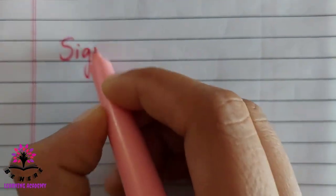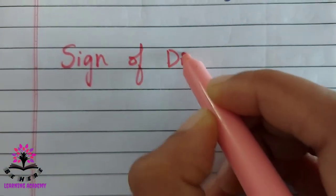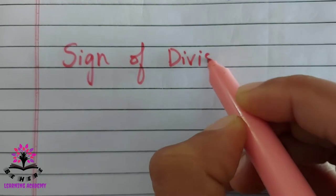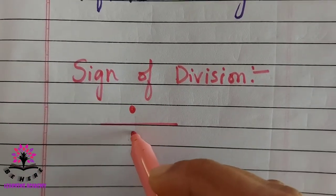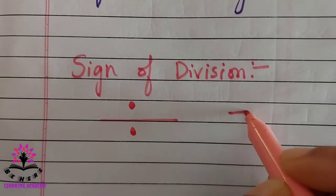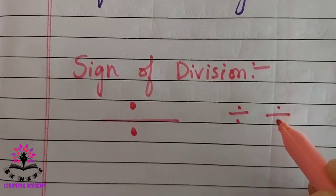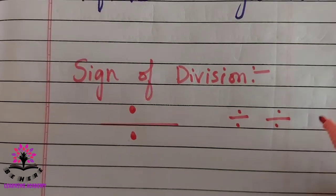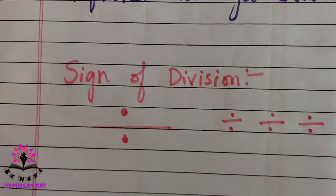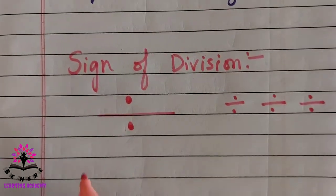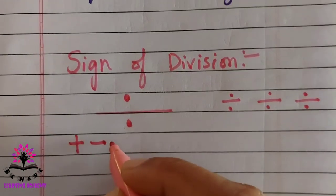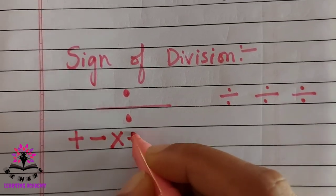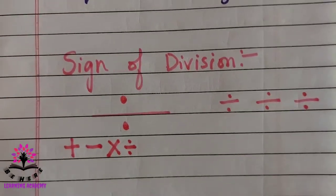Let us study the sign of division. The sign of division looks like this — one sleeping line and two dots. You already know the signs of addition, subtraction, and multiplication. This is the sign of division.